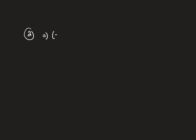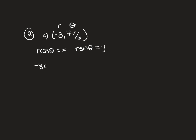The next problem has two parts. Part A gives the ordered pair (-8, 7π/6) in polar form and wants the rectangular form. This is r and theta. Remember that r·cosθ = x and r·sinθ = y, so I'll compute negative 8·cos(7π/6) for x and negative 8·sin(7π/6) for y.